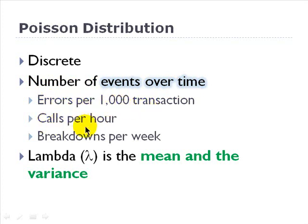This could be service calls per hour. This could be breakdowns per week, just for example. And that key elegant feature that I mentioned, lambda, is both the mean and the variance of the Poisson.